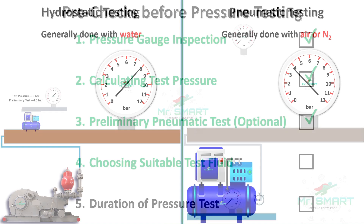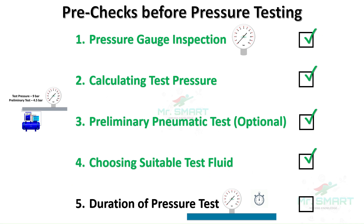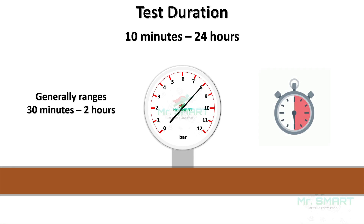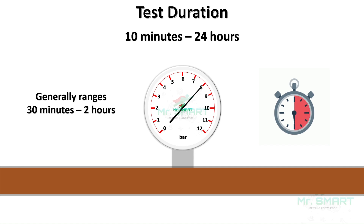Apart from all these checks, the most important step is deciding and finalizing the test duration. Holding a highly pressurized fluid inside a pipeline system for a prolonged period is very dangerous and should be properly released as soon as we are satisfied with the stability of the system. The common duration for a pressure test varies between 10 minutes to 24 hours, but generally ranges between 30 minutes to 2 hours, depending on the complexity of the piping system.